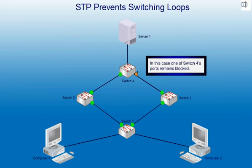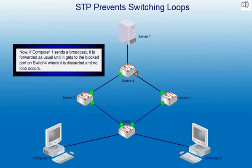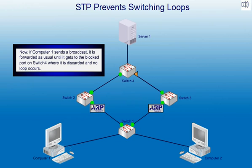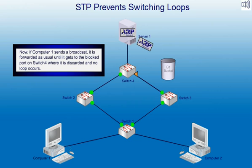In this case, one of Switch 4's ports remains blocked. Now, if Computer 1 sends a broadcast, it is forwarded as usual until it gets to the blocked port on Switch 4, where it is discarded and no loop occurs.